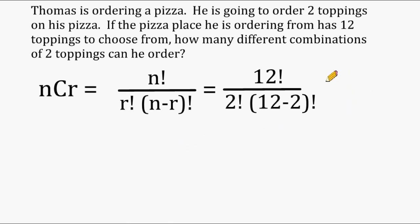So let's simplify this expression just a little bit. And that would give us 12 factorial divided by 2 factorial multiplied by 10 factorial. And we get this 10 from subtracting 12 and 2.